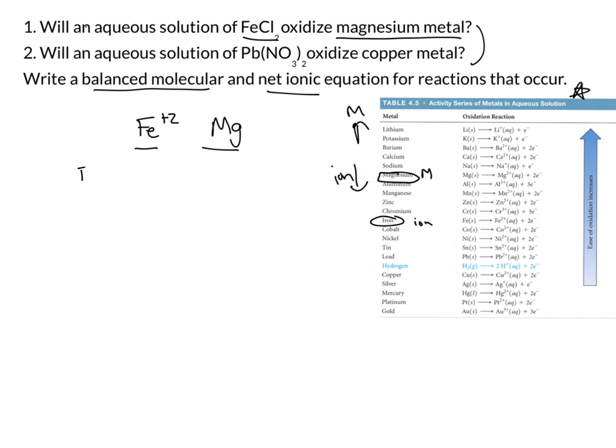So since we know this reaction is going to occur, let's go ahead and write a balanced molecular equation. FeCl2 plus Mg gives us MgCl2 plus Fe. And we look over it. It looks like it's balanced. We've got the correct magnesium. So this is our balanced molecular equation.